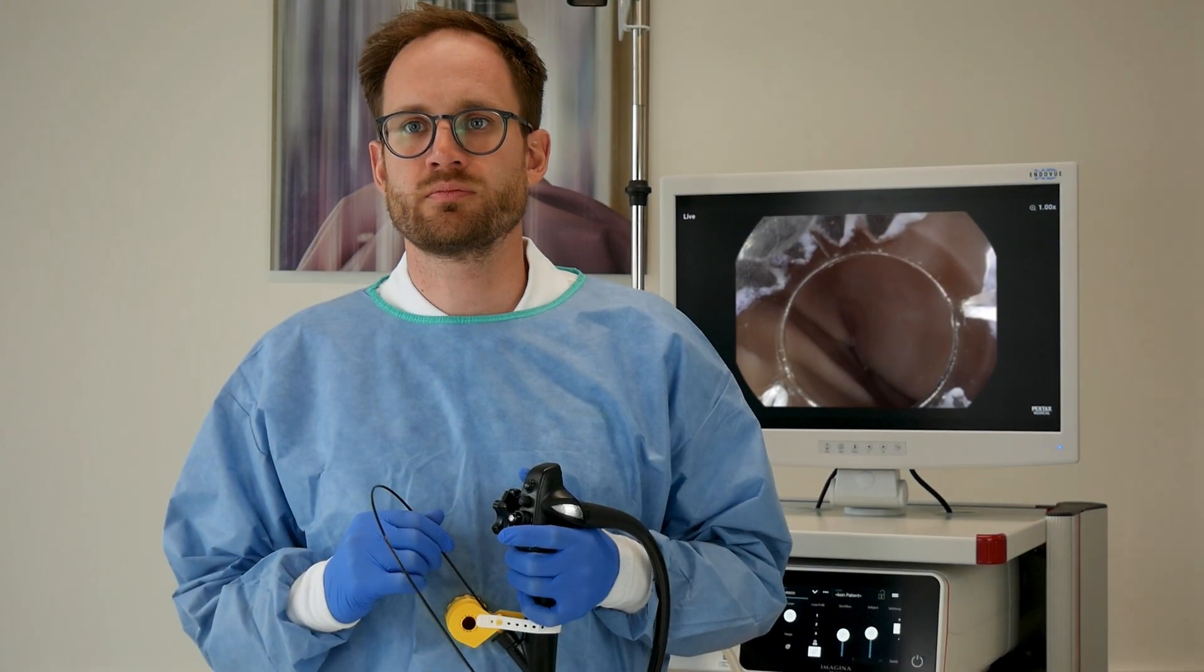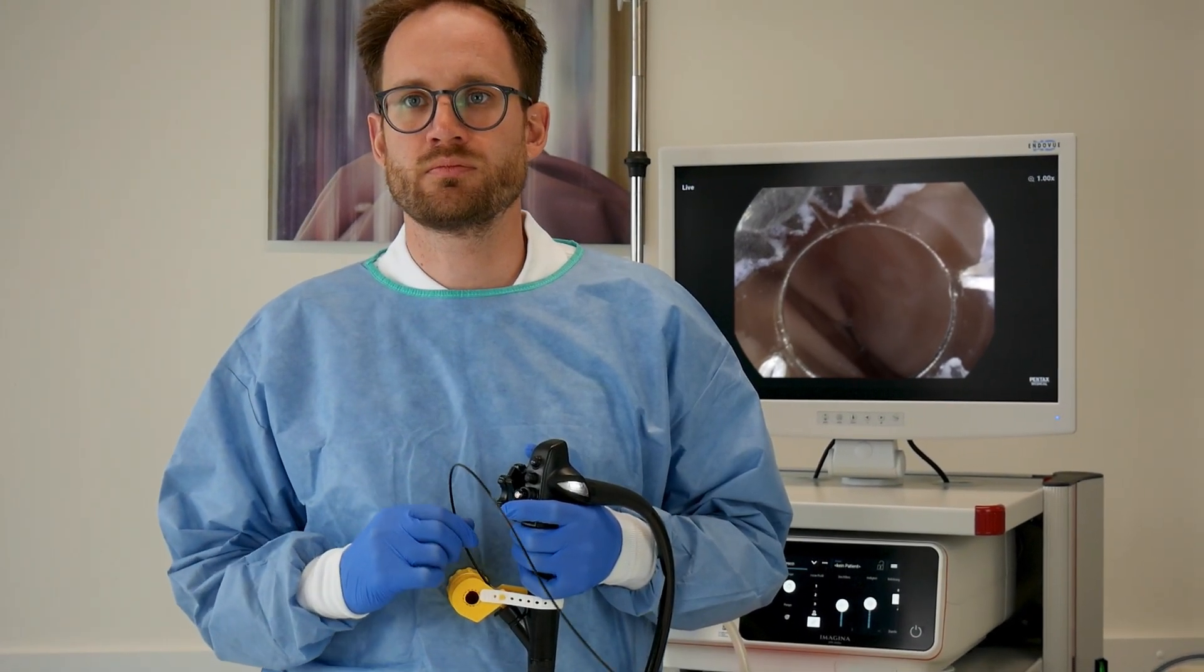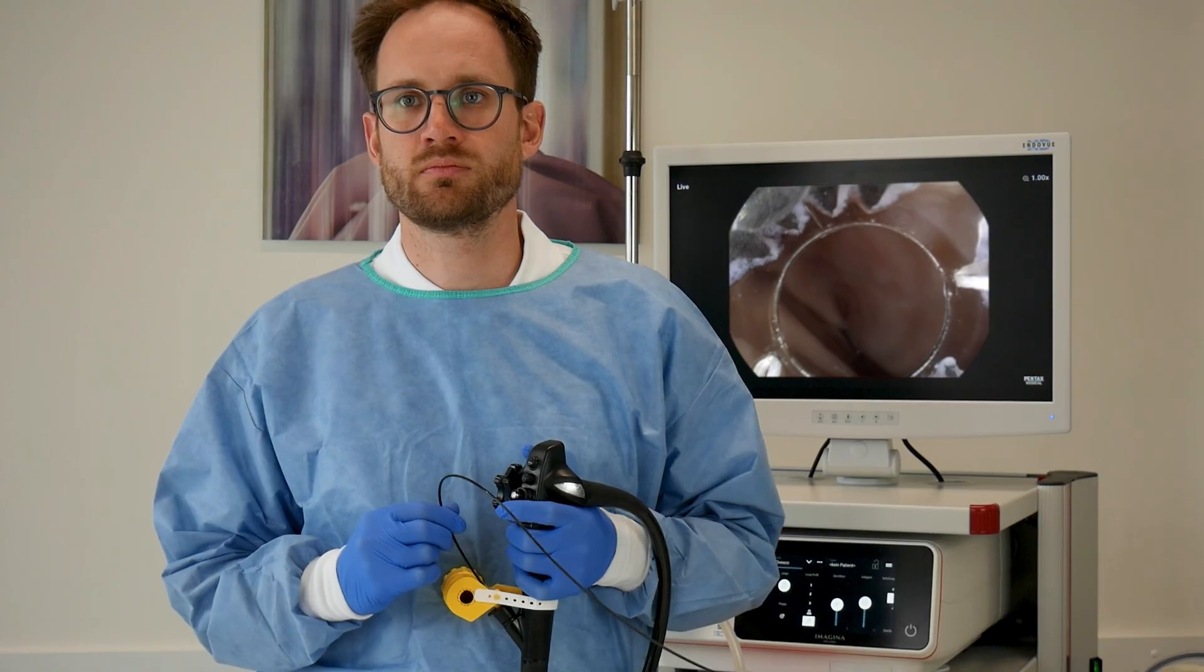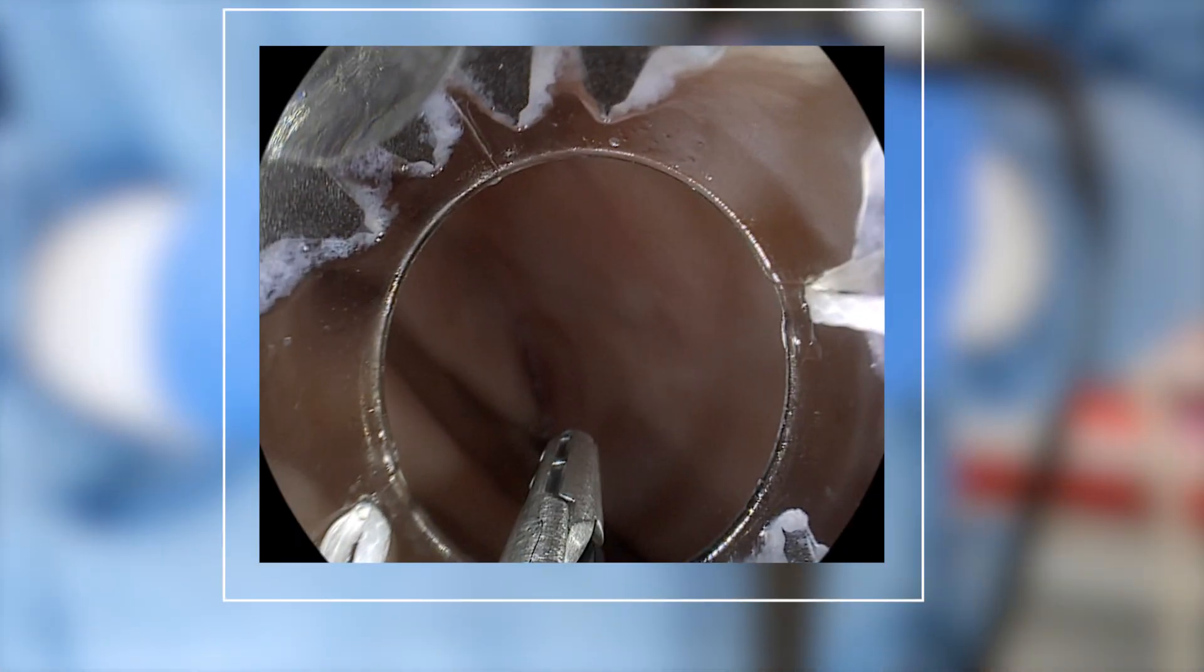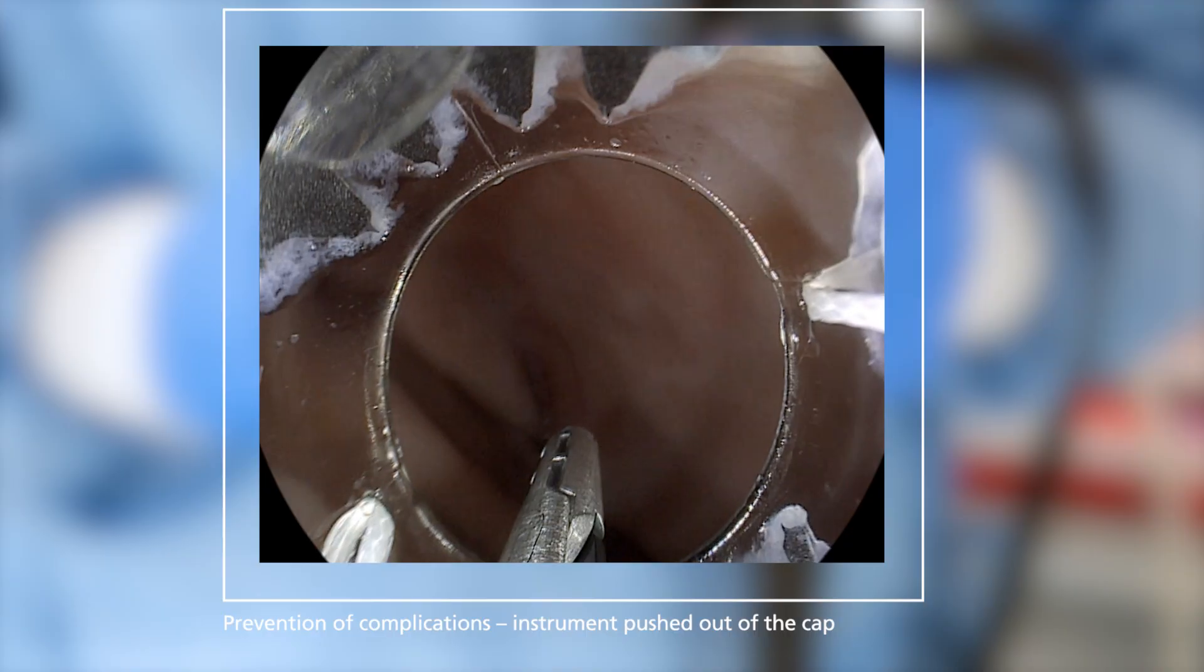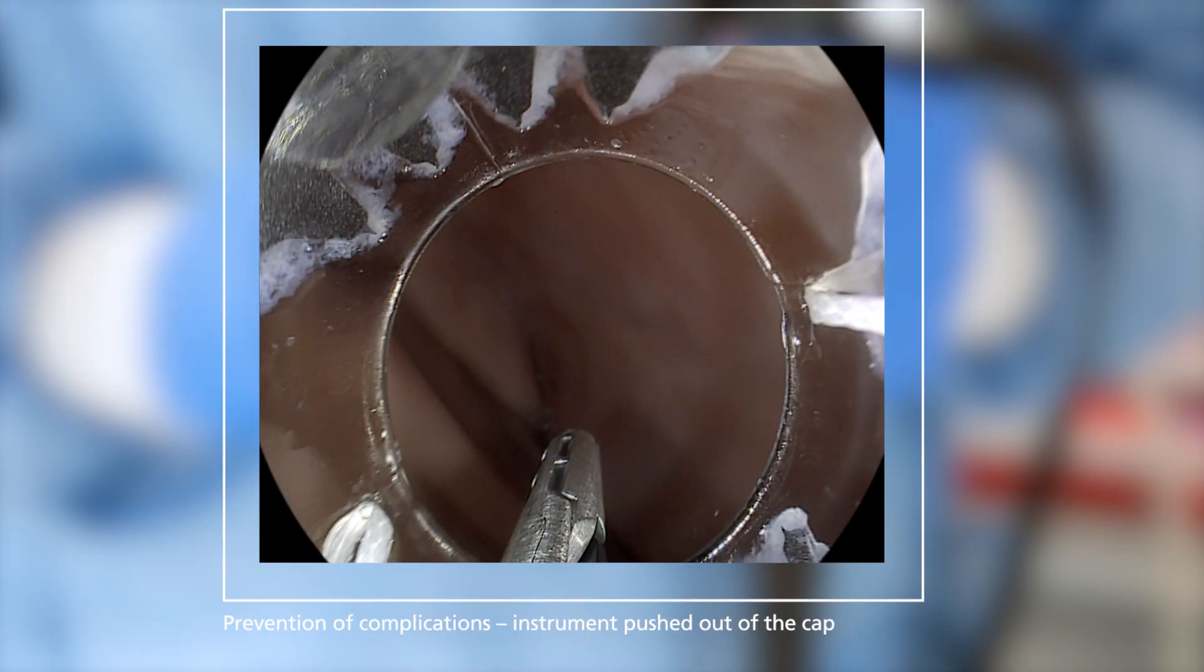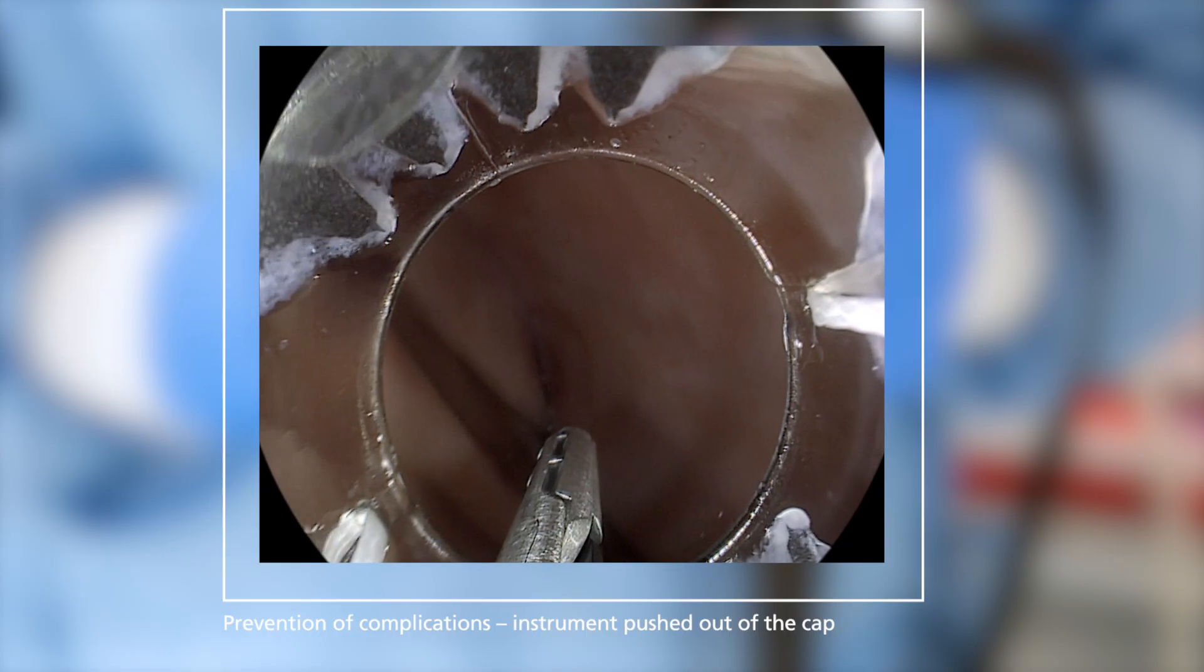If the clip could not be deployed, insert an instrument into the working channel before withdrawing the endoscope so that it protrudes slightly from the application cap. This serves as a safety measure to avoid complications in case the clip is accidentally deployed while withdrawing the endoscope.